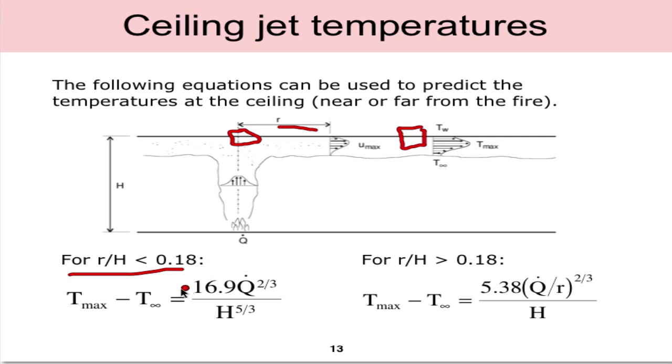In this case the ratio of r over h is less than 0.18 we use this equation. In the case where r over h is greater than 0.18 we use this equation. So depending on if we're near or far from the fire these different empirical equations apply.